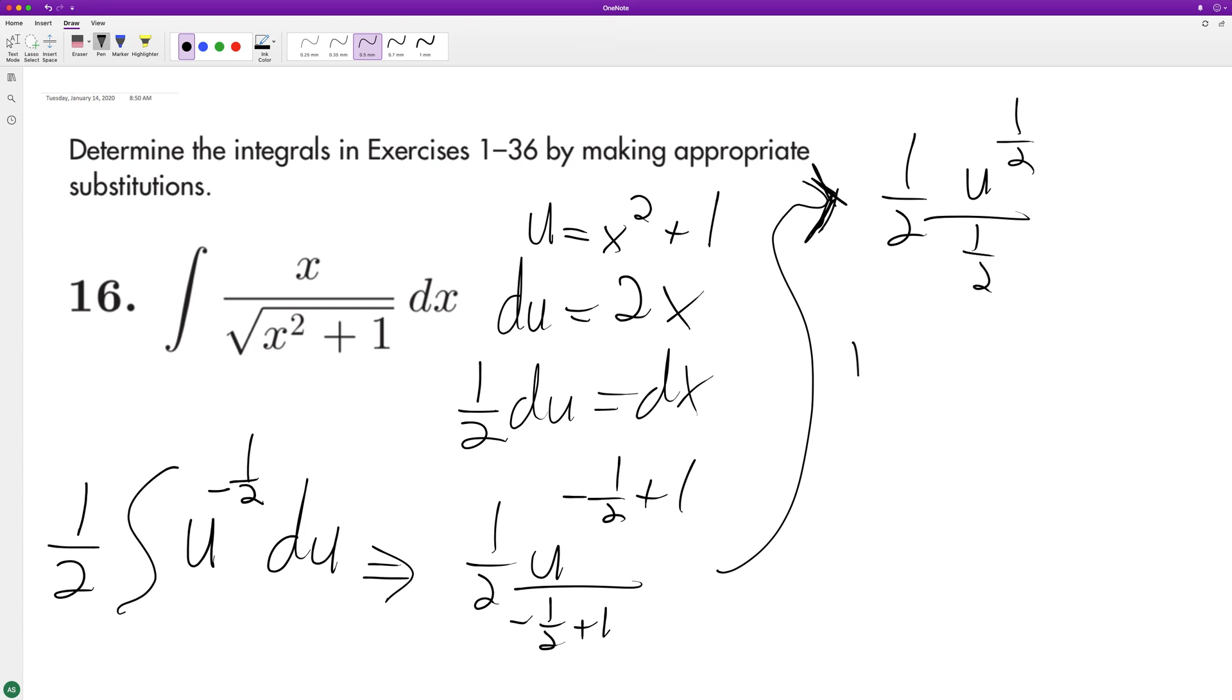This becomes 1/2 times 2 times u raised to the 1/2. These cancel out, leaving us with u raised to the 1/2, or the square root of u plus C, which is the same as substituting back.